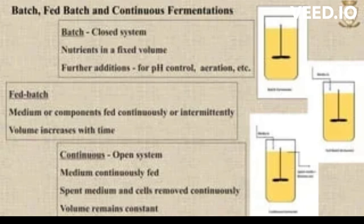Continuous culture allows for high cell densities, high productivity, and steady-state growth. However, it requires constant monitoring and control of the culture conditions, and can be more complex and expensive to set up and maintain.